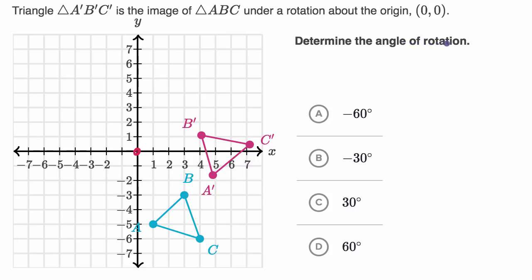So like always, pause this video, see if you can figure it out. So I'm just gonna think about how did each of these points have to be rotated to go from A to A prime, or B to B prime, or from C to C prime? So let's just start with A.